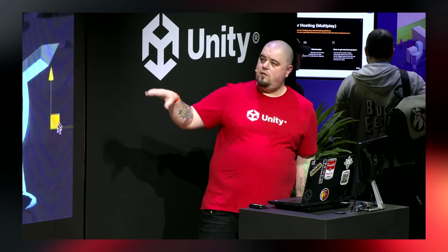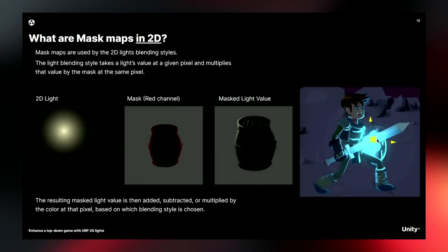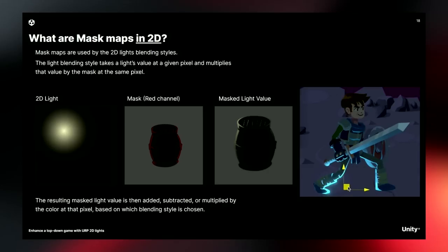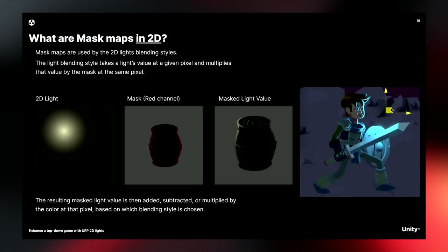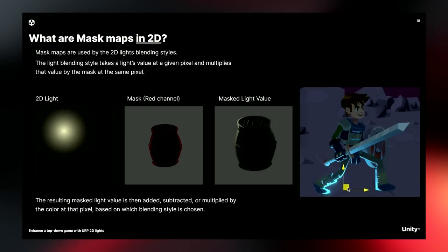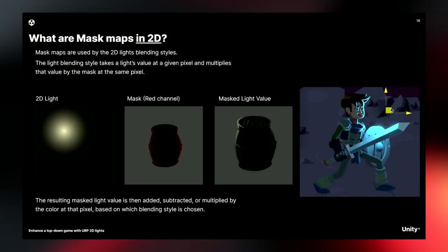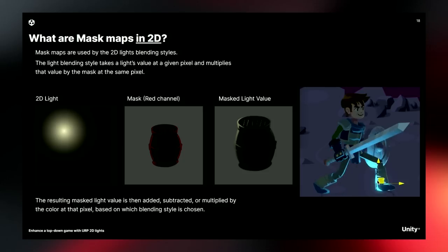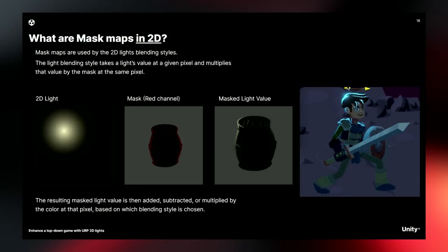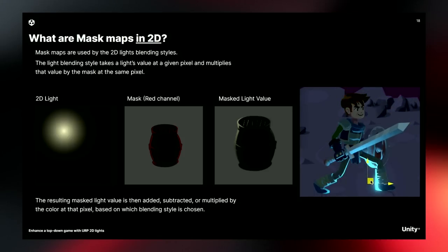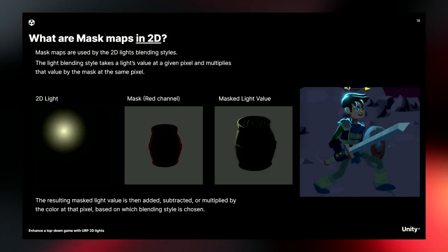Mask maps are basically a way for light to blend in a 2D space. You have your 2D light on the left, and the red channel is the actual map itself — it tells the light how to blend when it hits certain areas. As you can see with the character, a nice mask map means that as the light moves around, it gives that extra polish. Without the mask map the image looks nice, but when you add the mask map it makes it pop and look that much more professional.